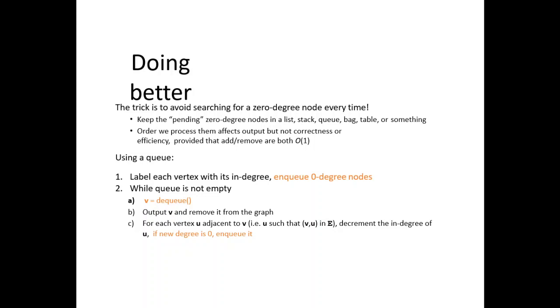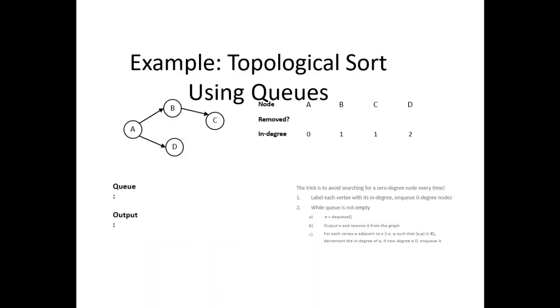But to do it better, you have to avoid searching for 0 in-degree node every time. You have to keep the pending 0 in-degree nodes in a queue, stack, or hash table. You have to order, pre-process effects, output and input, and sometimes delete or remove or add, it can be O(1), which is constant time. We have to sometimes use a queue. We have to label each vertex with its in-degree, enqueue any 0 in-degree nodes. Now, while the queue is not empty, we have to dequeue V from the query. We have an example now of topological sort using queue.